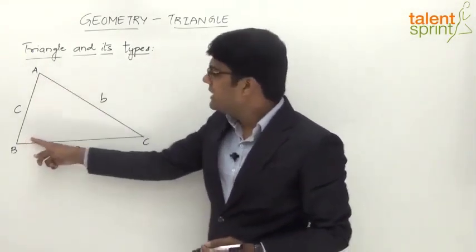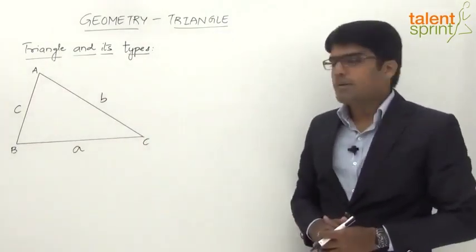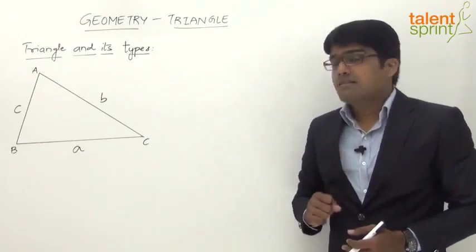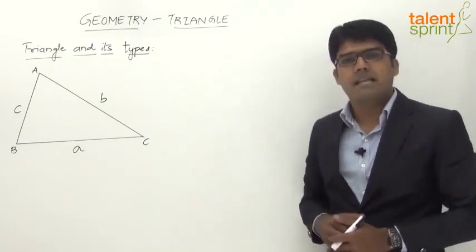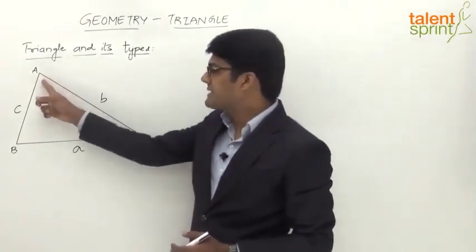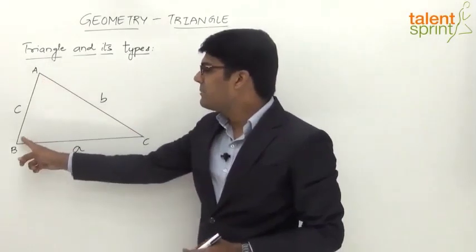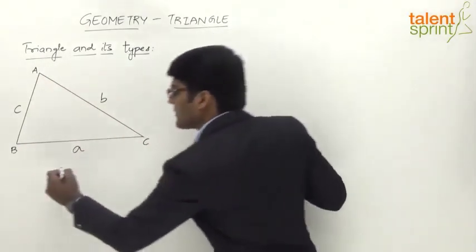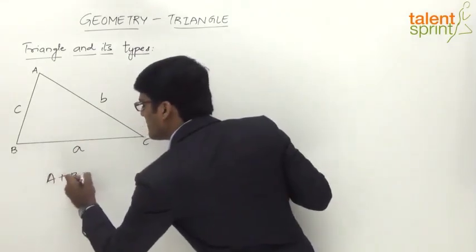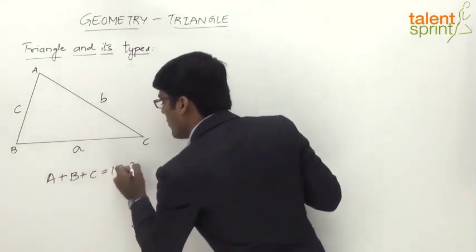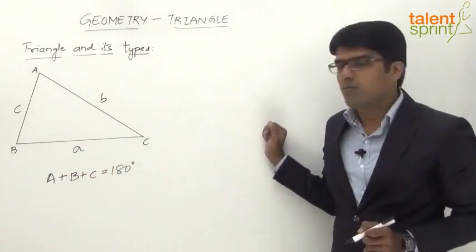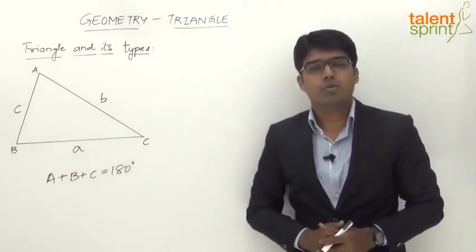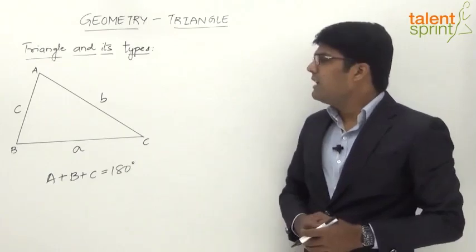The very first point to understand is the sum of the interior angles in any triangle. The sum of all three angles — angle A plus angle B plus angle C — will always be equal to 180 degrees.